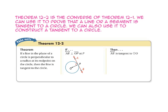Theorem 12-2 is the converse of Theorem 12-1. We can use it to prove that a line or segment is tangent to a circle, and also to construct a tangent to a circle. Theorem 12-2 says that if a line in the plane of a circle is perpendicular to the radius at its endpoint on the circle, then the line is tangent to the circle. Since line AB is perpendicular to segment OP, which is the radius of the circle, line AB is tangent to the circle.